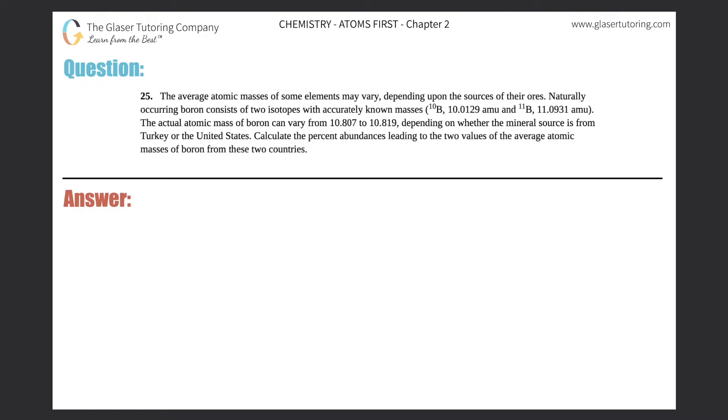Number 25. The average atomic masses of some elements may vary depending upon the sources of their ores. Naturally occurring boron consists of two isotopes with accurately known masses. Boron-10 is 10.0129 AMU, and boron-11 is 11.0931 AMU, and the actual atomic mass of boron can vary from 10.807 to 10.819, depending on whether the mineral source is from Turkey or the United States. Calculate the percent abundances leading to the two values of the average atomic masses of boron from these two countries.